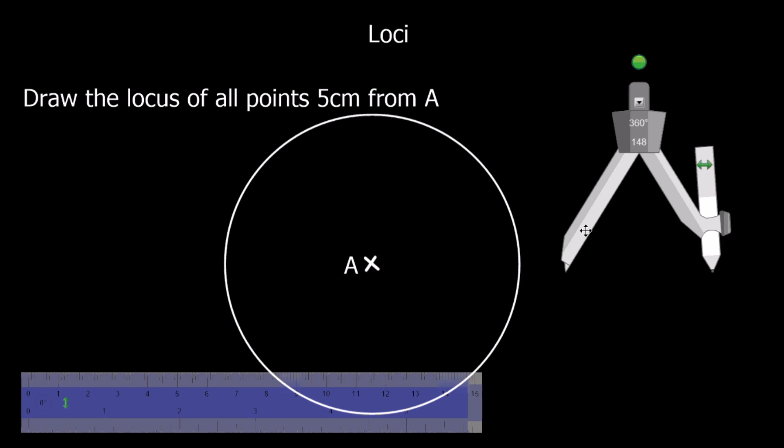So the locus of all points from a single point, the locus from a single point is a circle. So here we've got just a circle around A with a radius of 5.